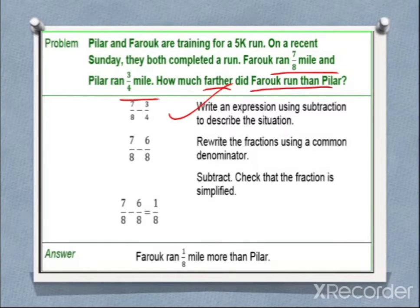We have to generate equivalent fractions having denominator equal to LCM. Here you can see 8 will be the LCM because 8 is also the multiple of 4. Now we will multiply and divide by 2: 3 times 2 is 6/8. Now we can subtract: 7/8 minus 6/8. We will get 1/8. So Farooq ran 1/8 mile more than Pillar.